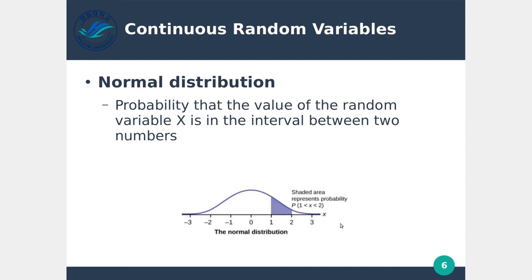Looking at the normal distribution, we have a curve going up in the center and down on both sides. In the center you have the greatest probability of landing there, and the lowest probability on either side. Imagine this was course grades — on the left-hand side you'd have A-pluses, and on the right-hand side you'd have Fs. In a normal class, few people have A-pluses and few people have Fs — there should be a low chance of getting an F and a low chance of getting an A-plus.